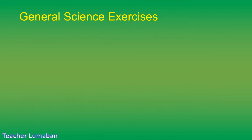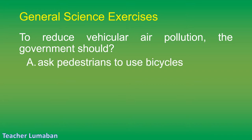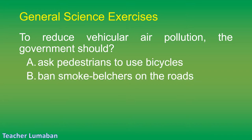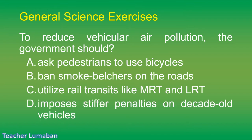To reduce vehicular air pollution, the government should: Letter A: ask pedestrians to use bicycles. Letter B: ban smoke belchers on the roads. Letter C: utilize rail transits like MRT and LRT. Letter D: impose stiffer penalties on decade-old vehicles.